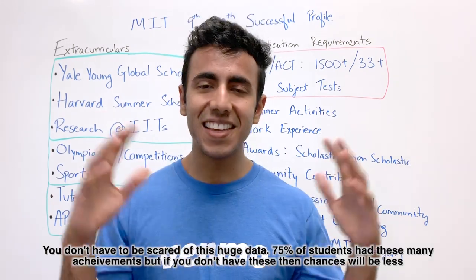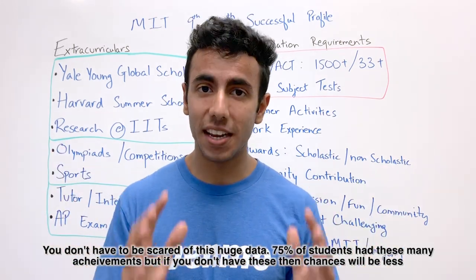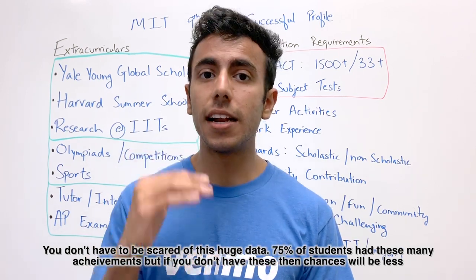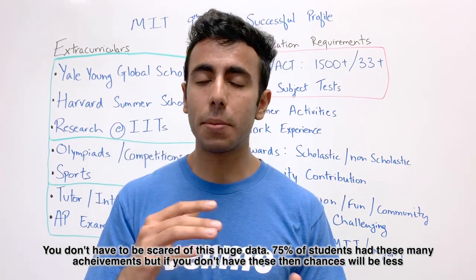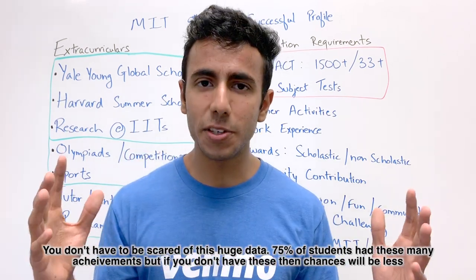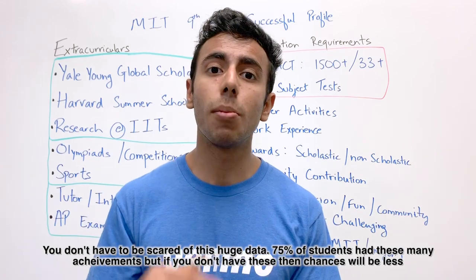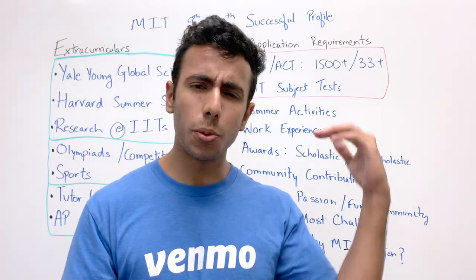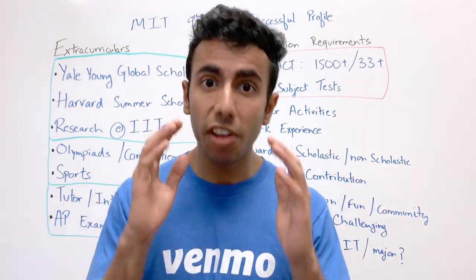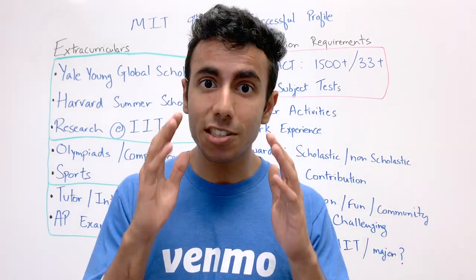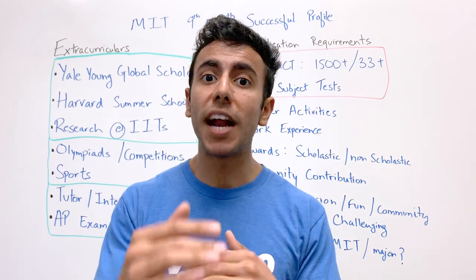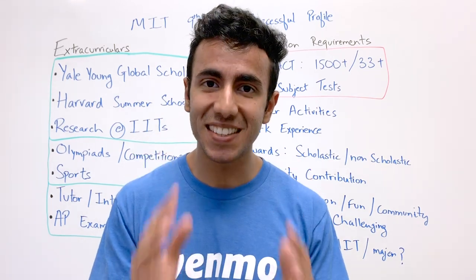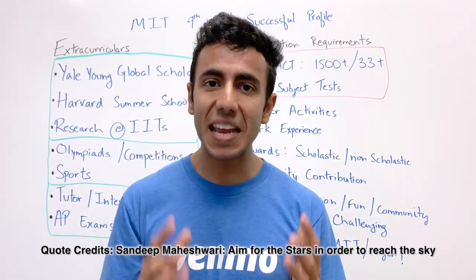This is 75th percentile data, meaning if you have this many achievements, your chances will be higher. If you have fewer achievements, chances will be lower — but they still exist. So if you have an aim to be bigger, keep going.